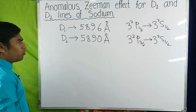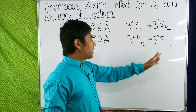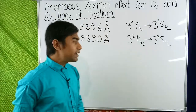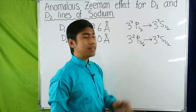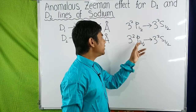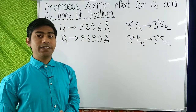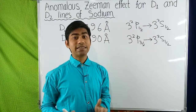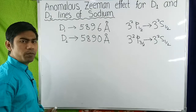Now for the three states — the first state is the 2S½ state, the second state is the 2P½ state, and the third state is the 2P 3/2 state — we write the values of L, S, J, and Mj in a table form.